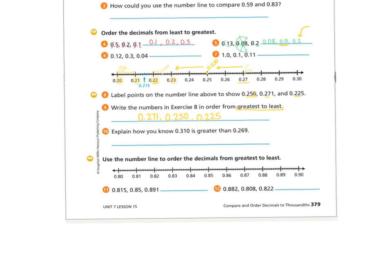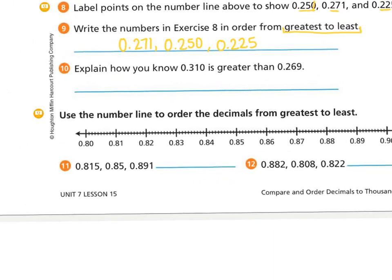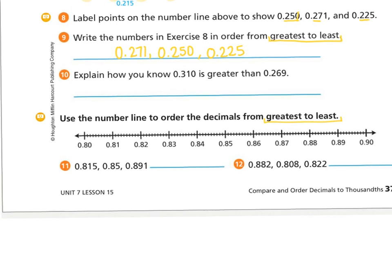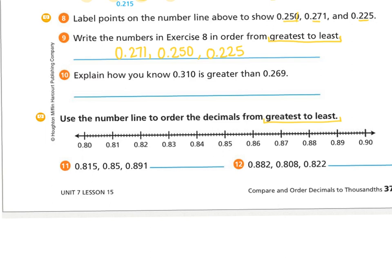The last thing we're going to do on this page is number eleven. They're asking you to order these decimals from greatest to least. I can do that with my cross-out trick or using my number line — let's do the cross-out trick first and then check with the number line. First, I'm going to cross out my whole numbers. Then I'm going to look just at my tenths spot — all of my tenths are eight, so that doesn't help me order them at all. Cross those out too.